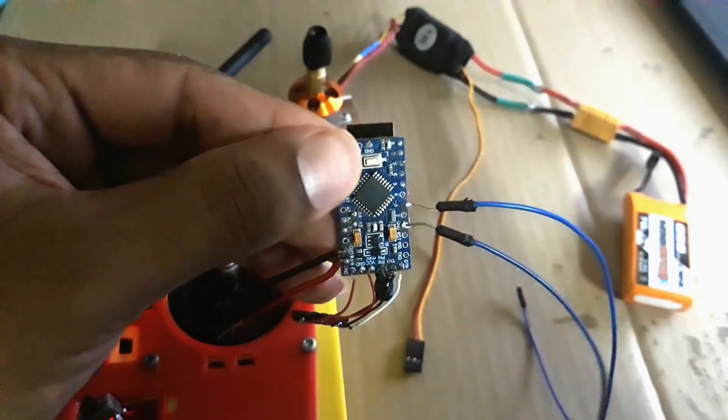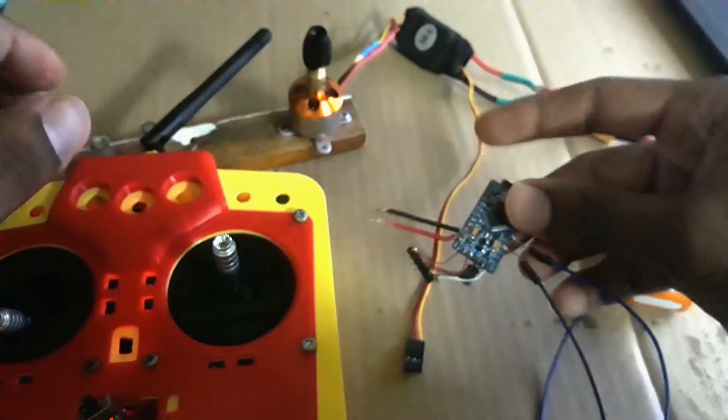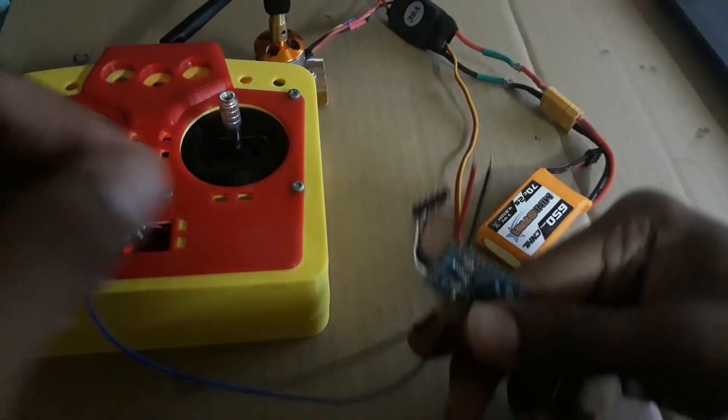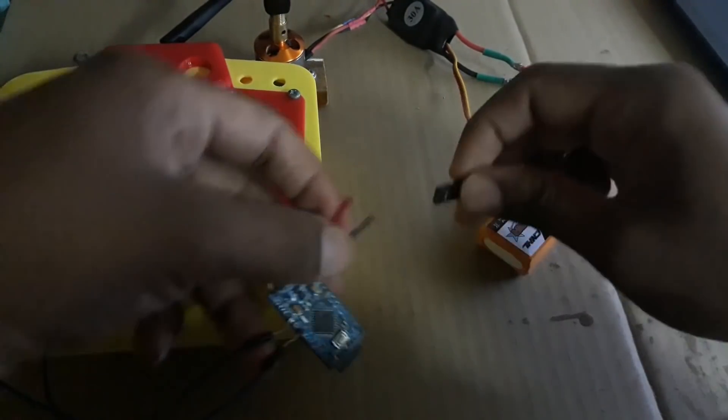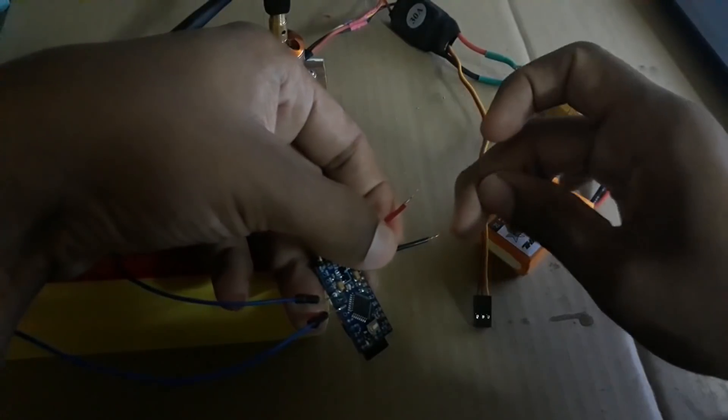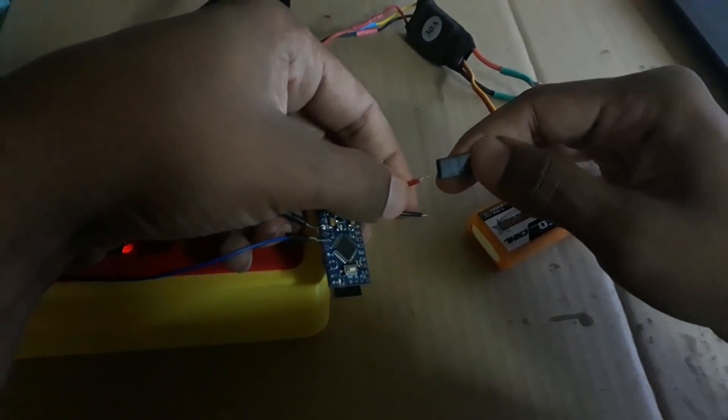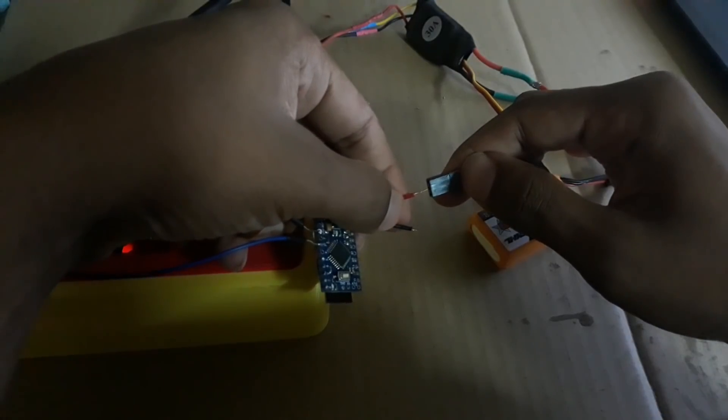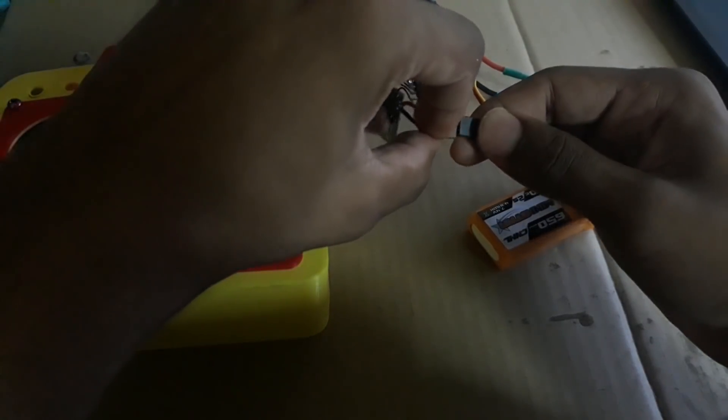I have also added two wires to check if the signal is being received. So I will connect the positive and negative terminal of the receiver to the BEC of the ESC. You can see it's lighting up.